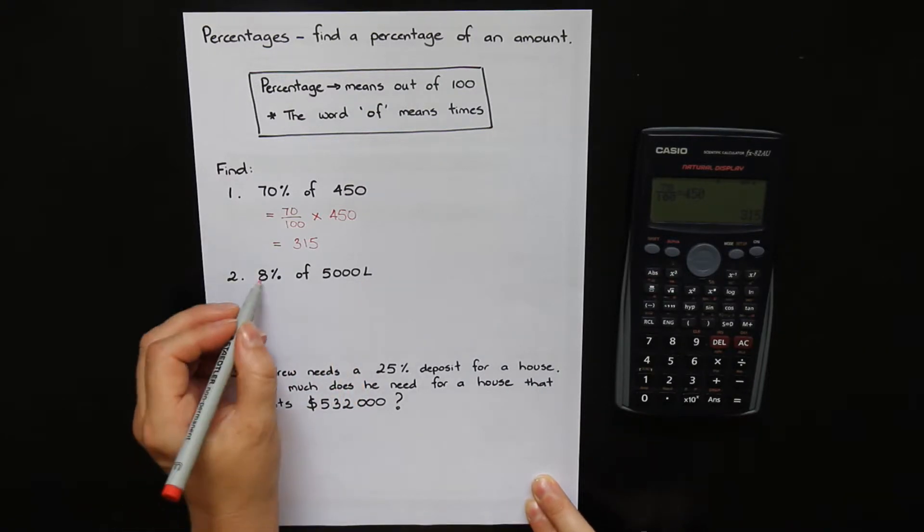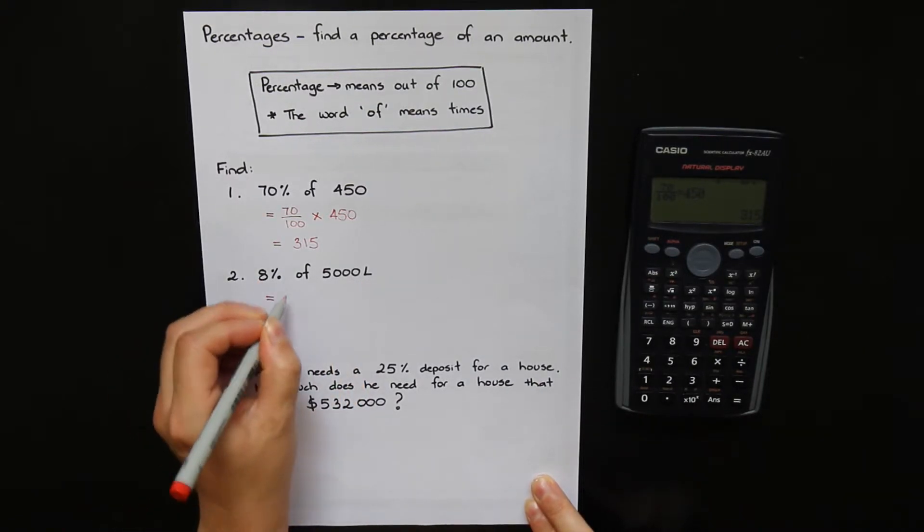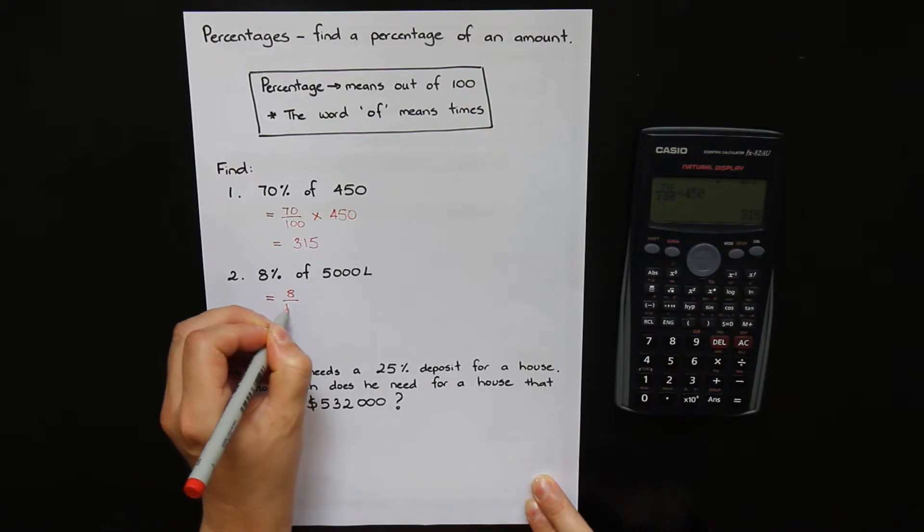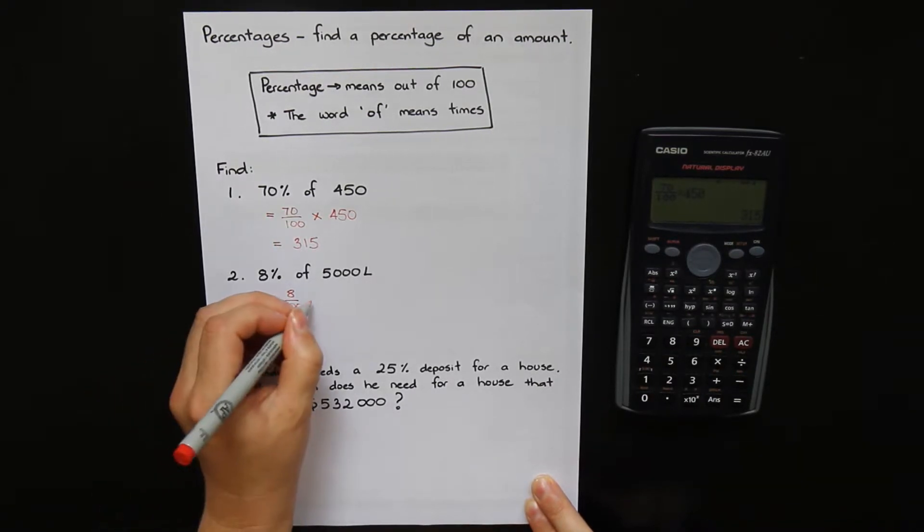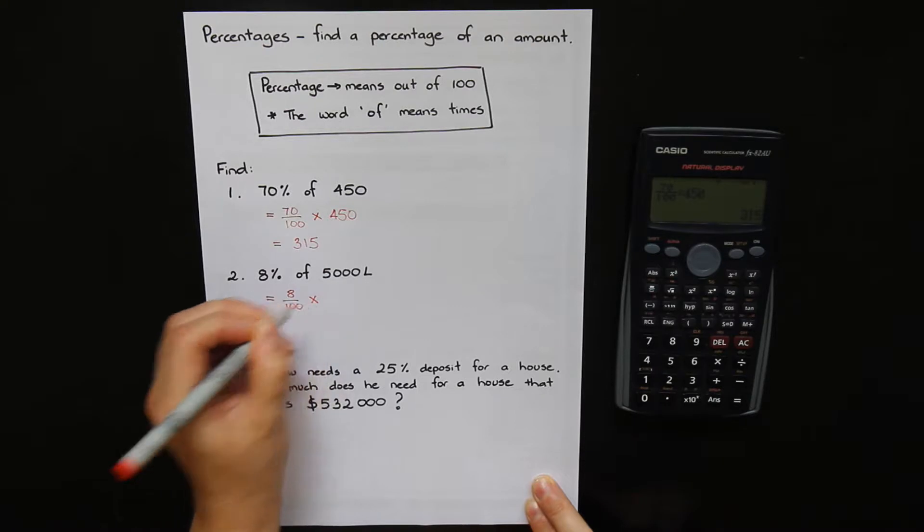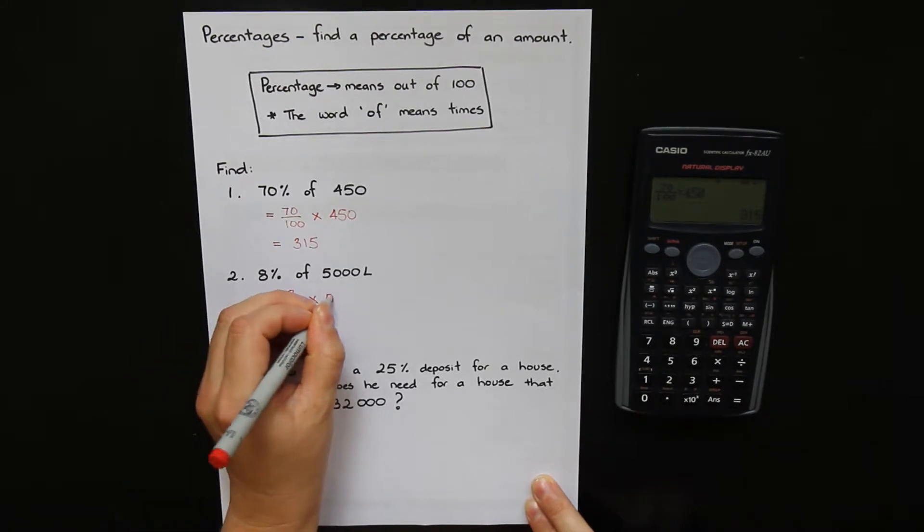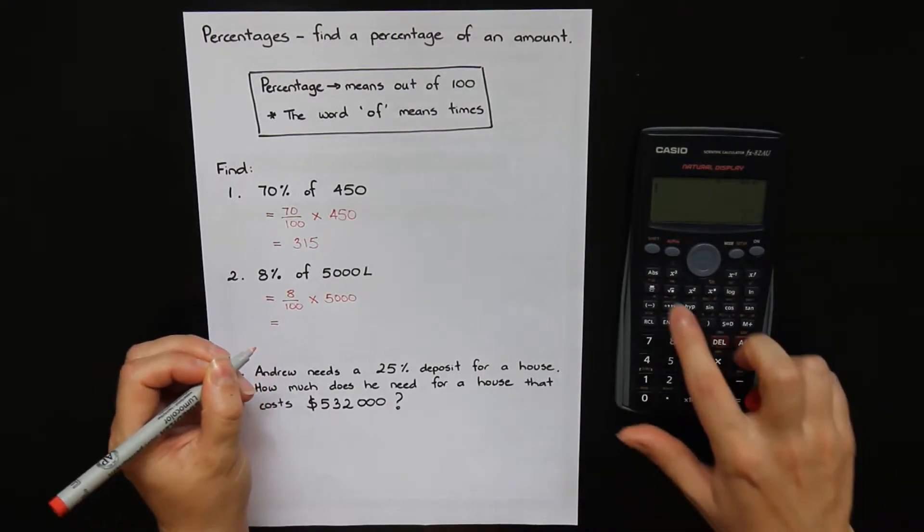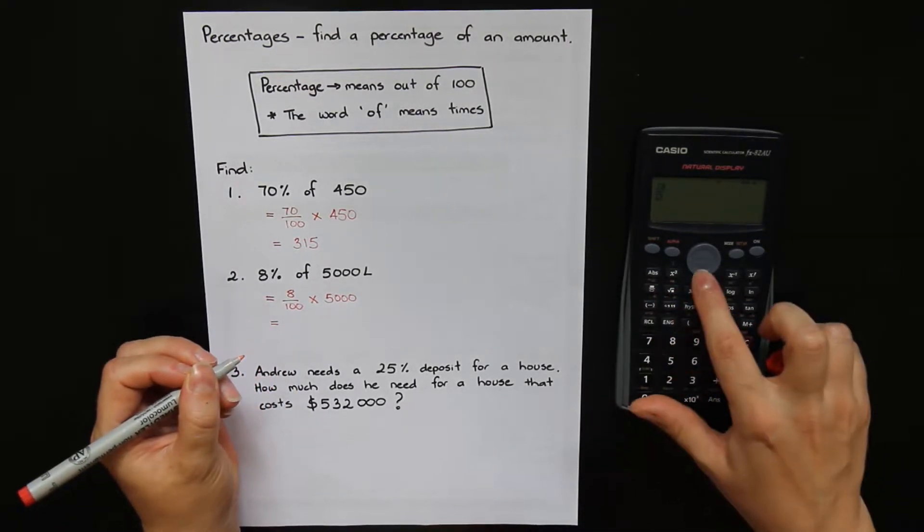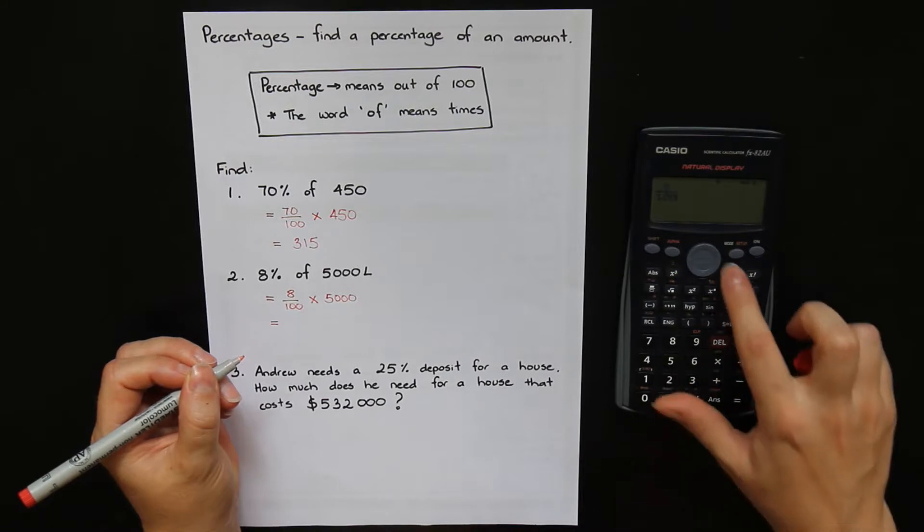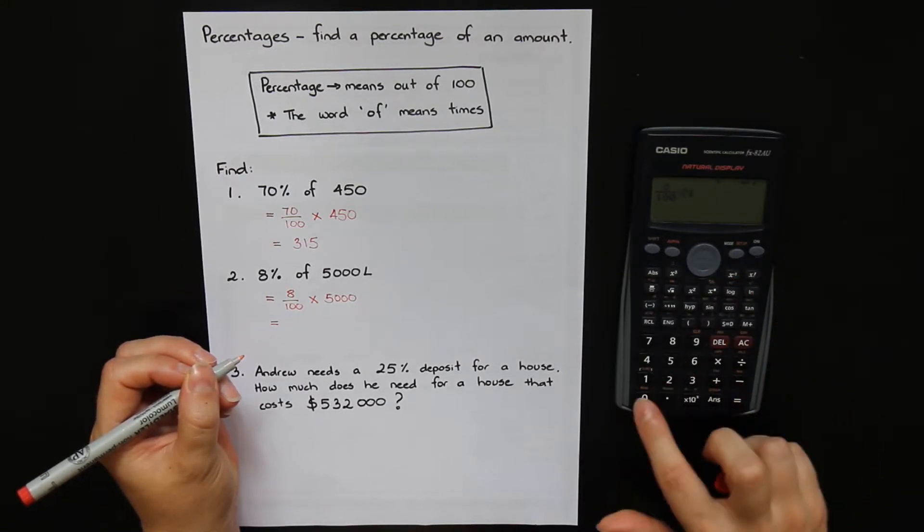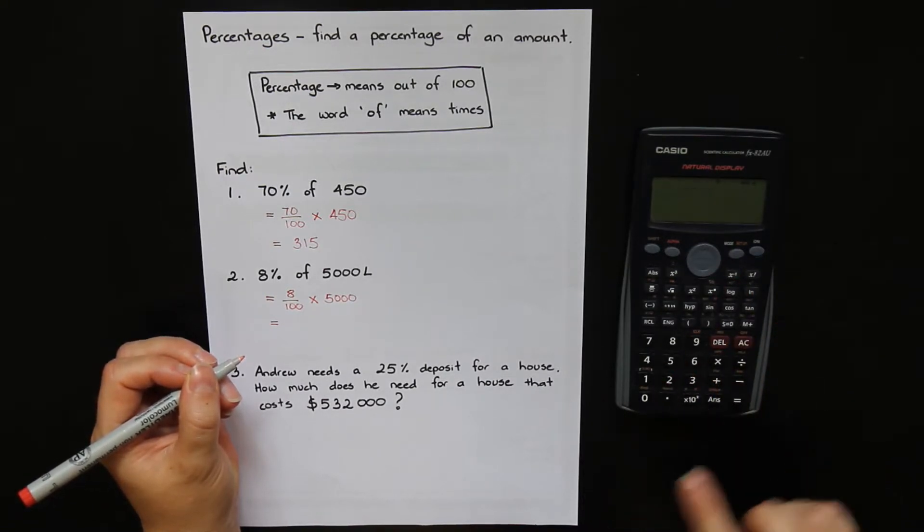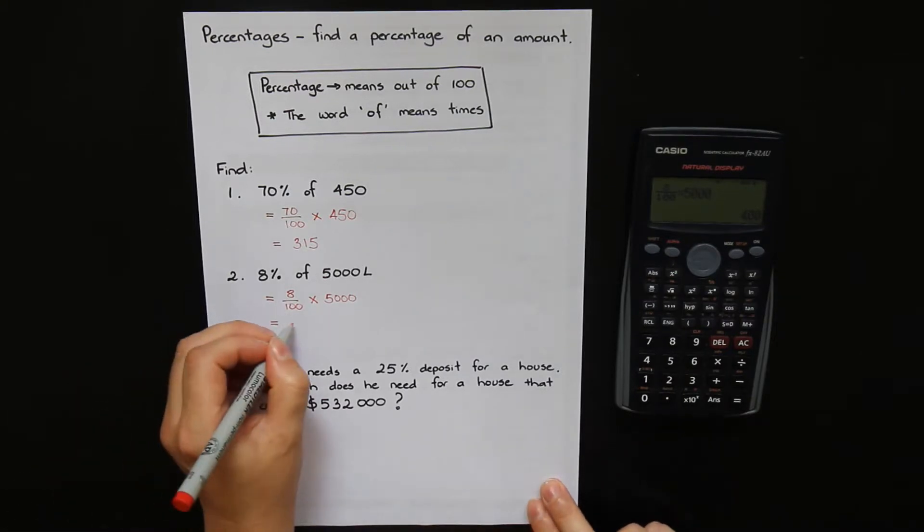So just like last time, 8% means 8 out of 100, of means times by 5000. And we use our calculator to type that in. 8 over 100 times by 5000 equals 400.